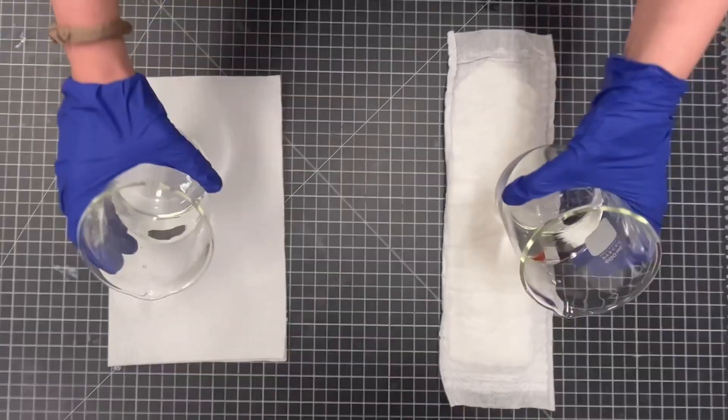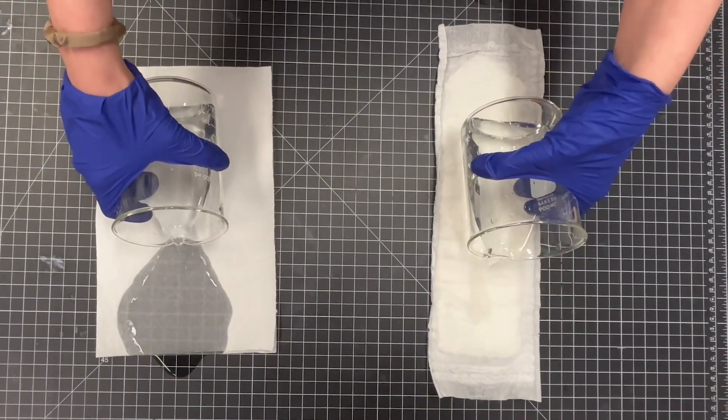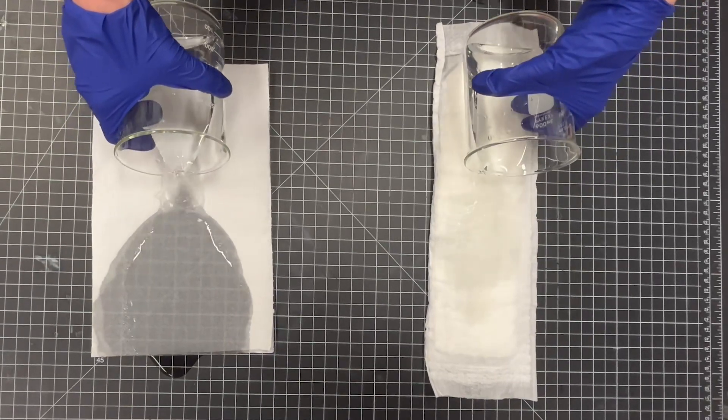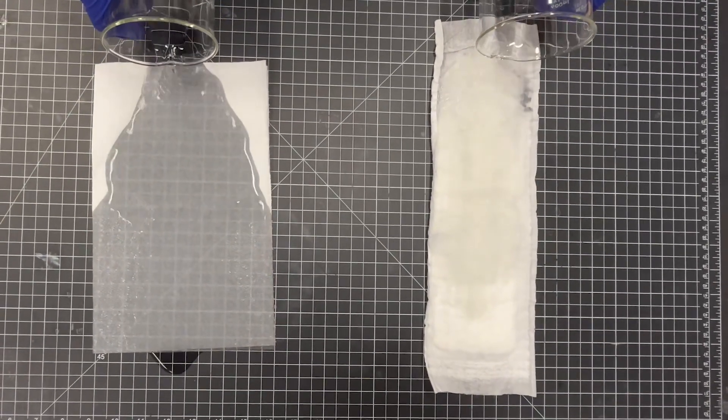As we pour 150 milliliters of water onto the kitchen towel and absorbent pouch from the diaper, we see that the towel is letting water spill out, whereas the diaper is absorbing it all. Based on product requirements, this makes sense.